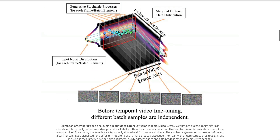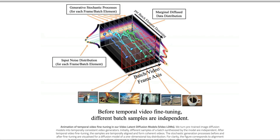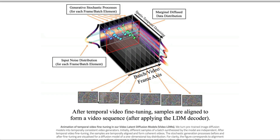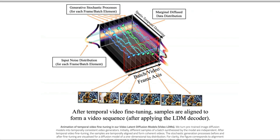To see a demo: before temporal video fine-tuning, the images generated are completely different from each sample — you're just getting different, unrelated images. But when the same model has been fine-tuned with temporal video fine-tuning, the samples are aligned to form a video sequence, meaning they are coherent. You're not going to see the strange flickering that you see with current image-to-video generation models.